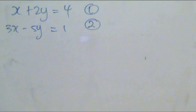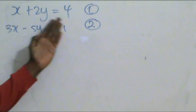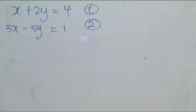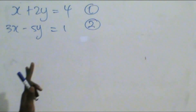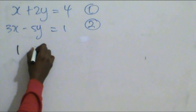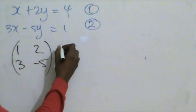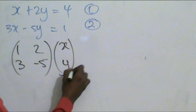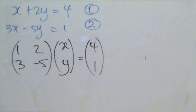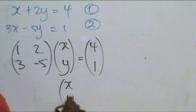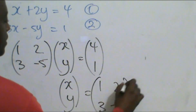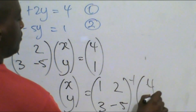We have the pair of equations: x plus 2y equals 4 (equation 1), and 3x minus 5y equals 1 (equation 2). We extract the matrices to form the matrix equation: the coefficient matrix [1, 2; 3, minus 5] times [x; y] equals [4; 1]. The next line is that X, Y equals the inverse of [1, 2; 3, minus 5] multiplied by [4; 1].